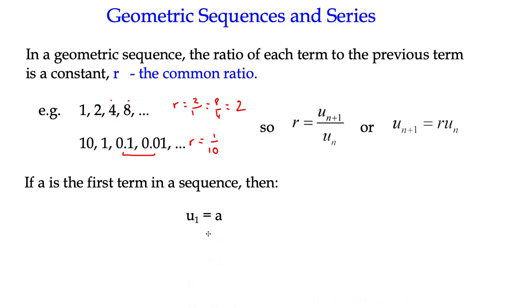The second term, therefore, is going to be a multiplied by r, the common ratio. The third term is going to be a multiplied by r times r again. So that's ar squared. The fourth term is going to be ar cubed.